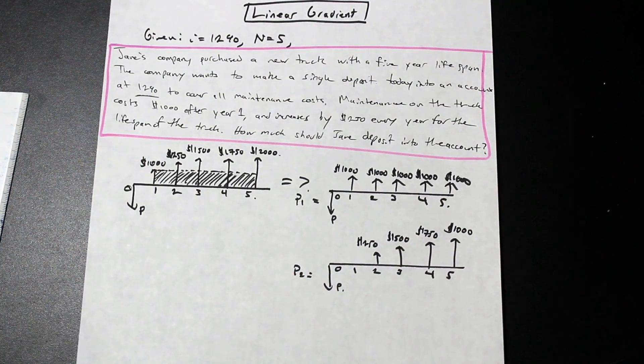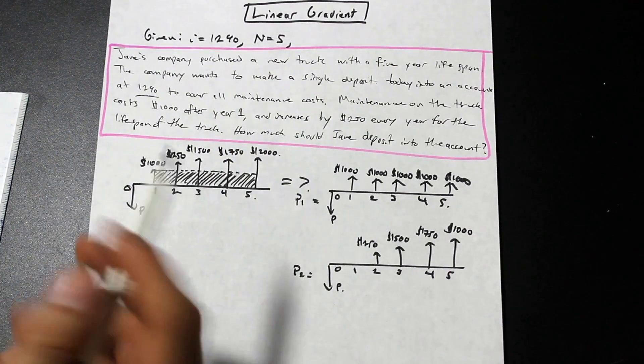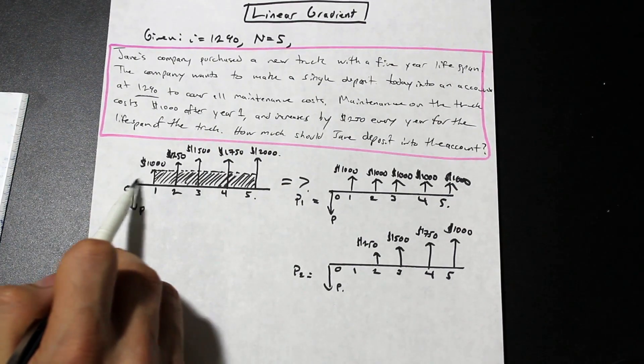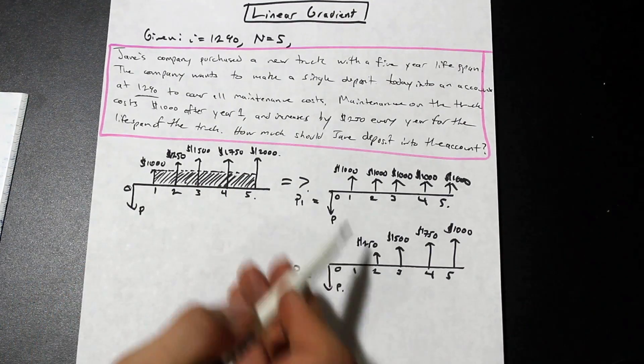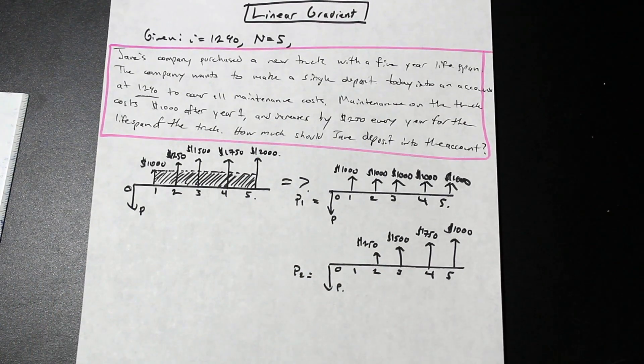And why we've done this is so that we can go to the tables, and we can use the table values and really speed up the question. Because you could, you know, you could do P given F for each value as well, but this is a little bit faster. So let's try it this way. And this is a good way to practice and get a good understanding of cash flow diagrams.